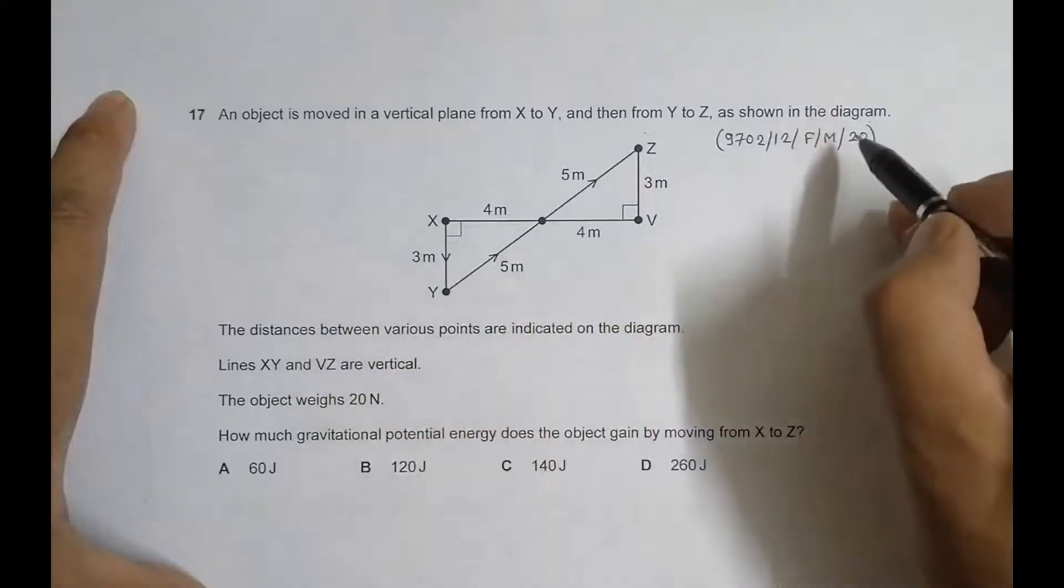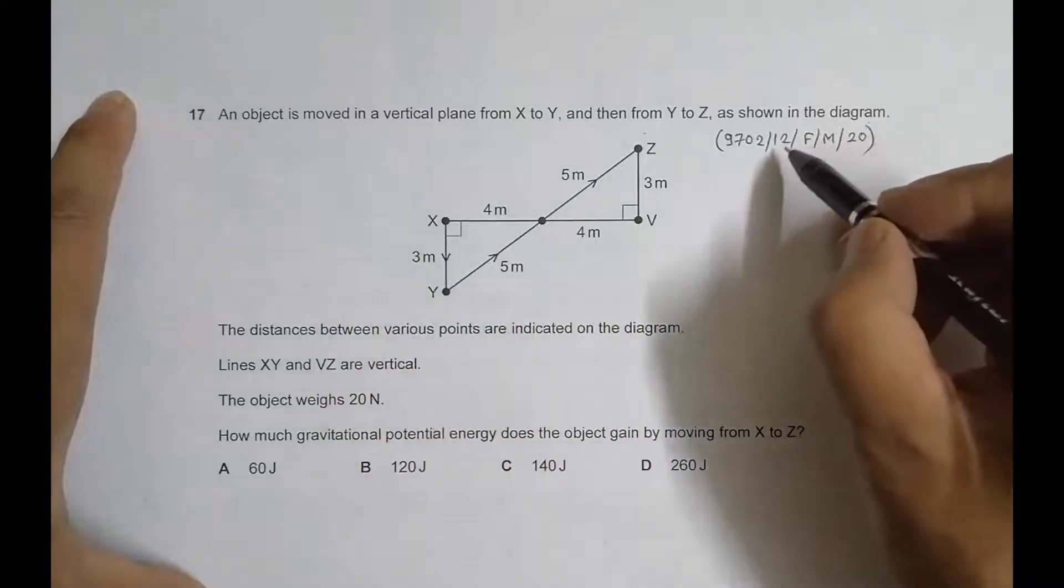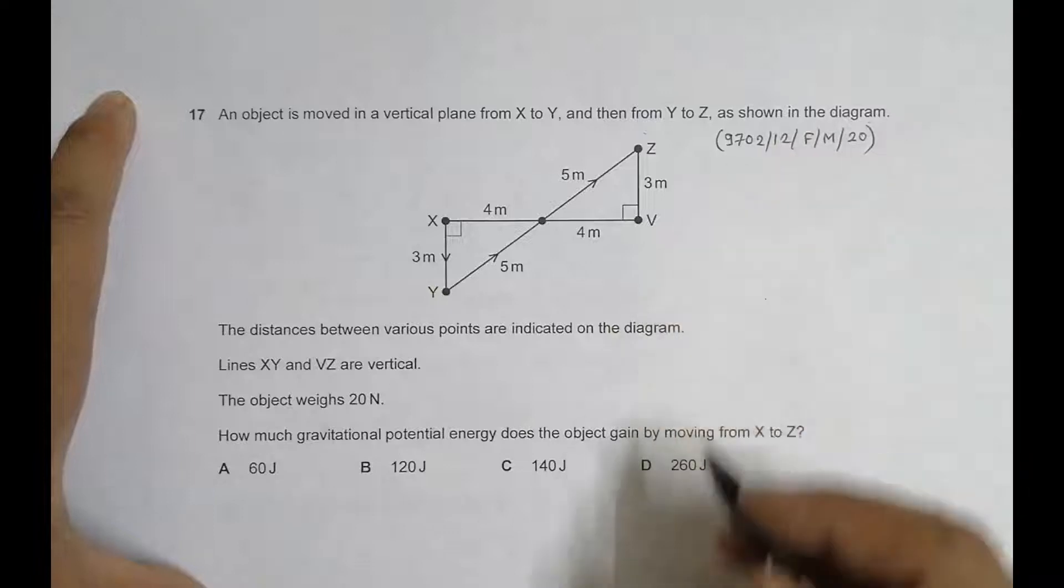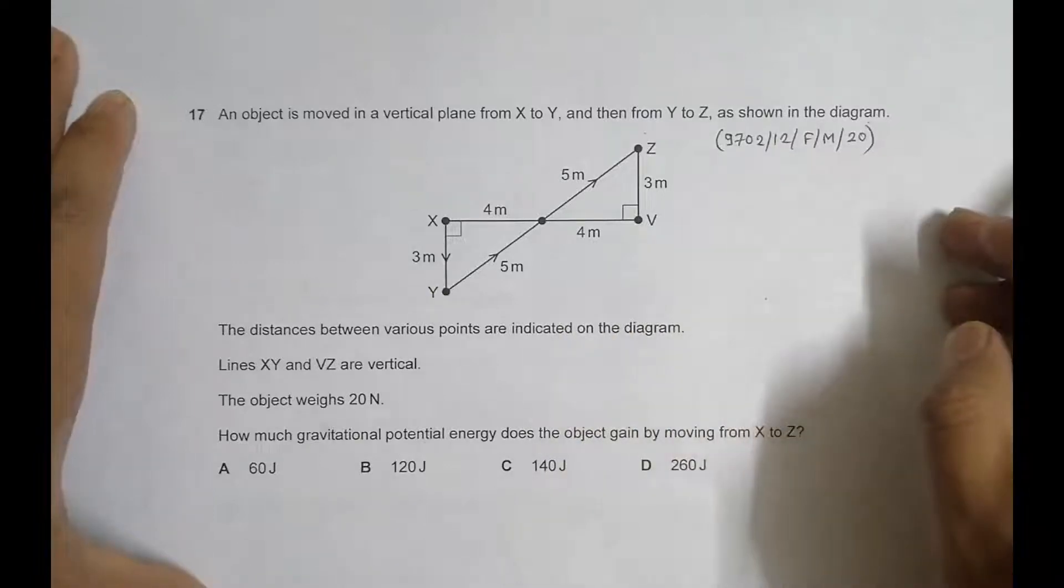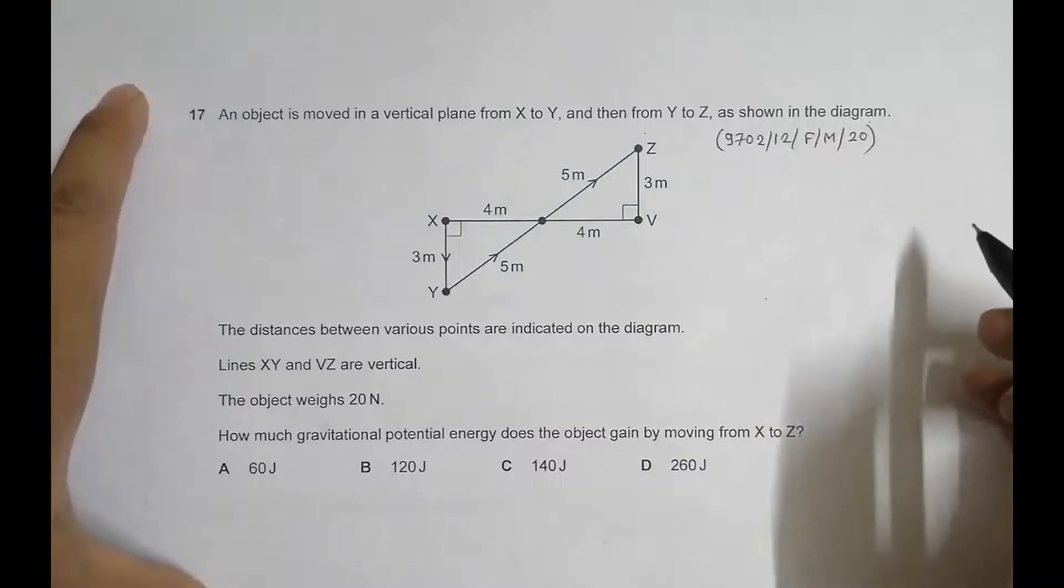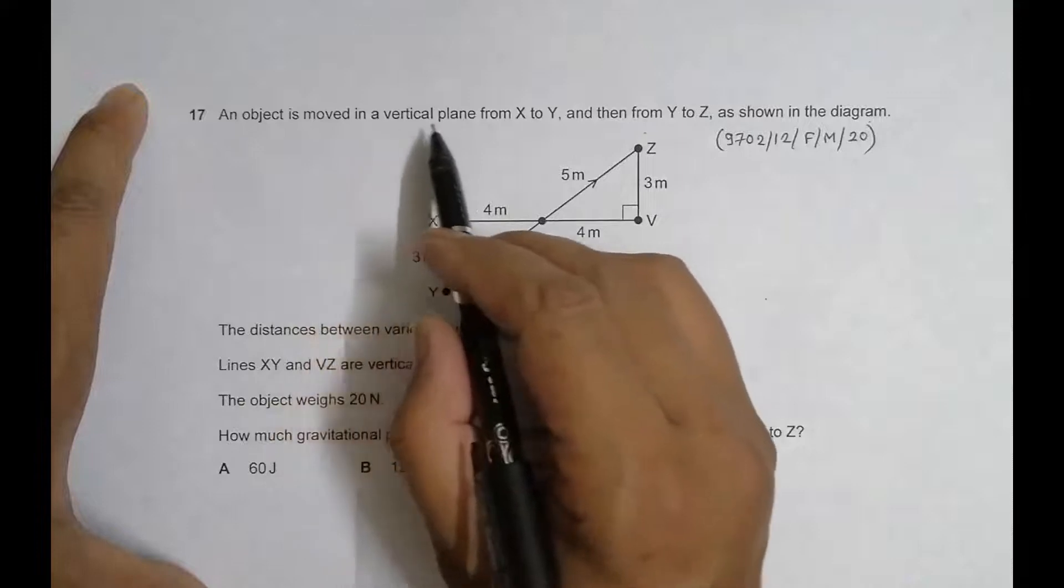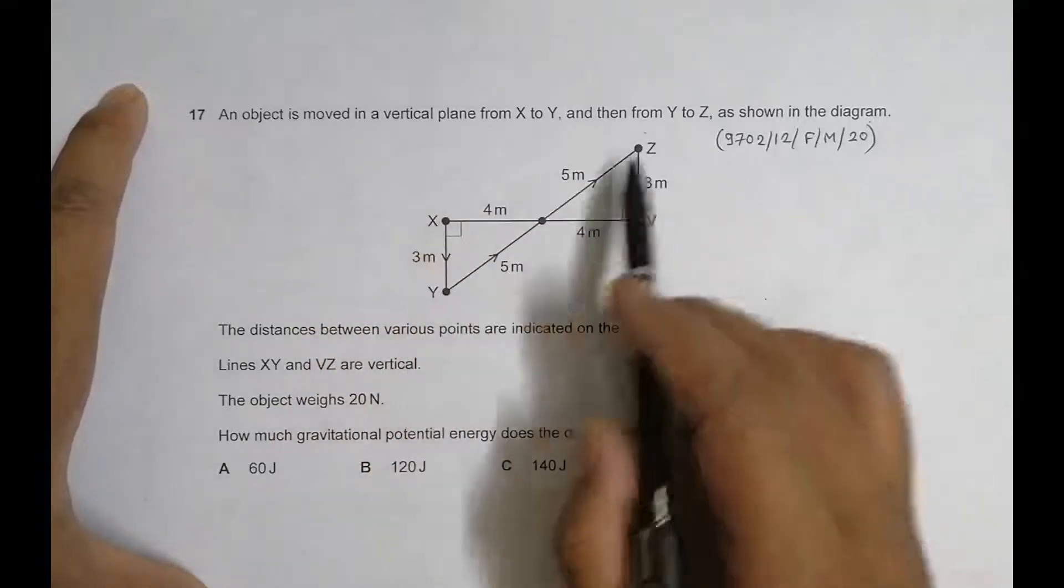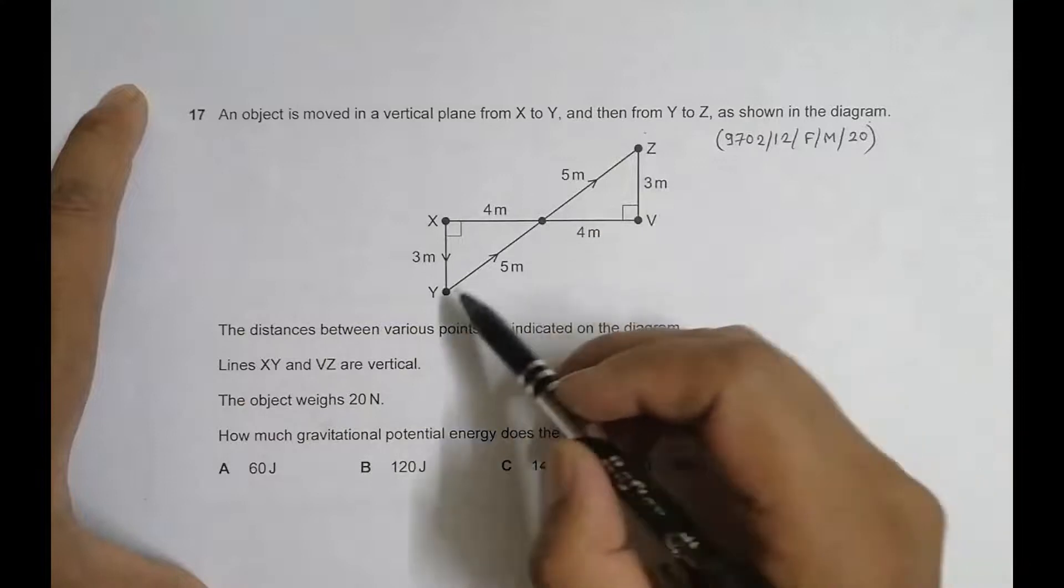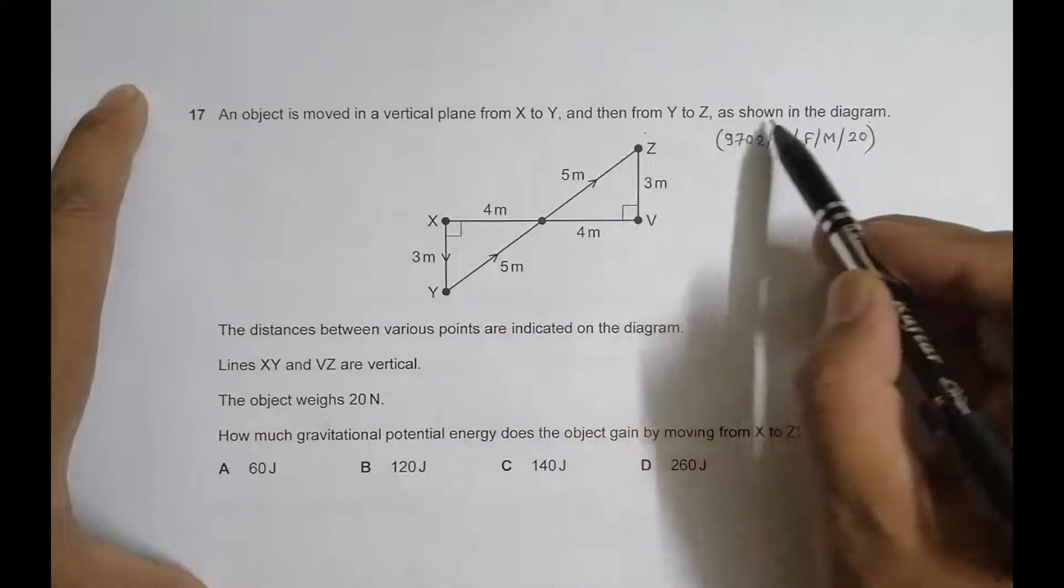Hello folks, the question today is question number 17 from the 2020 February-March session paper 1-2. The question is related to the chapter of work, energy, and power. It says that an object is moved in a vertical plane from X to Y, vertical plane, then from Y to Z.